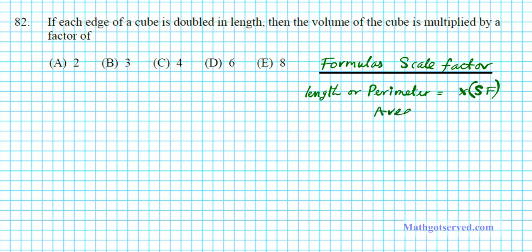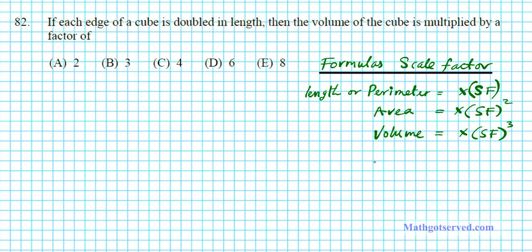For area, you've got to multiply the old area by the scale factor quantity squared. Remember, the dimension for area is length squared — length times length — so you have to multiply it by the scale factor squared. For volume, you multiply by the scale factor raised to the third power. So to summarize: length or perimeter, just multiply by the scale factor; area, multiply by scale factor squared; volume, multiply by scale factor cubed.